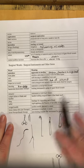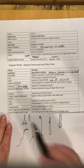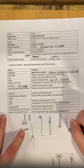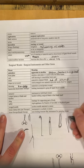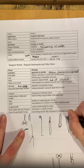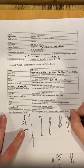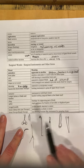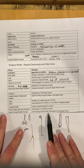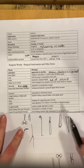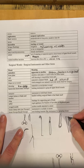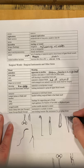Tissue forceps, or thumb forceps, look like tweezers. They often have little teeth on the end and are used for gripping tissues — a non-locking, tweezer-like instrument for grasping tissue. When they have the little teeth, they're called rat tooth forceps.